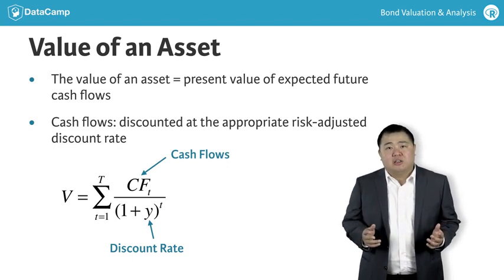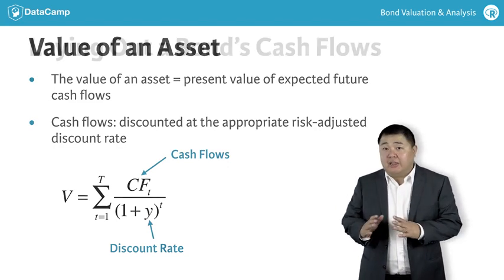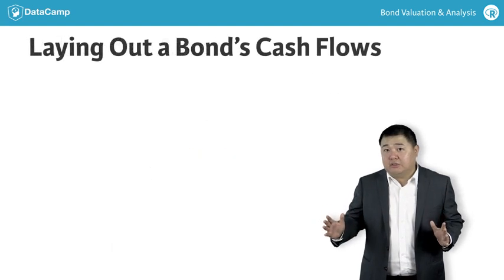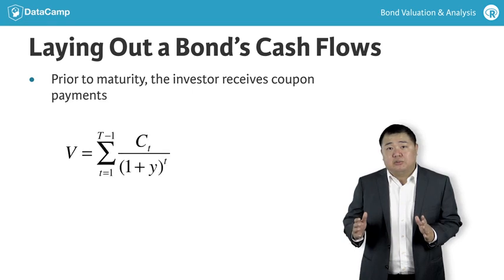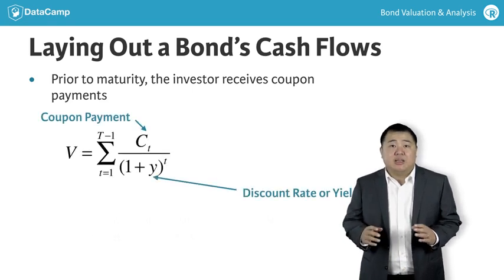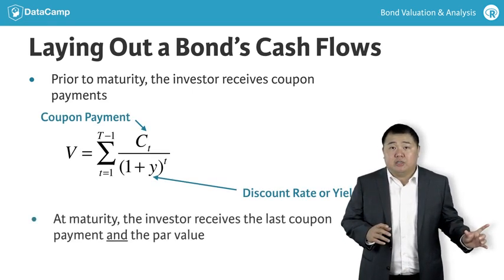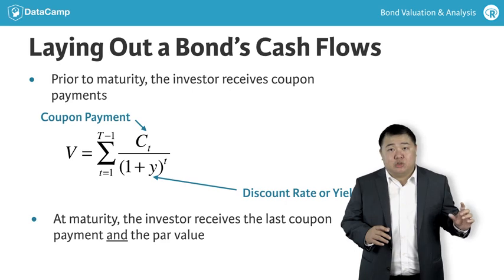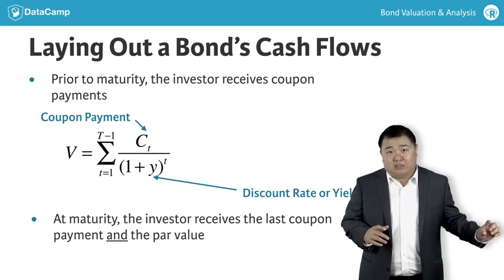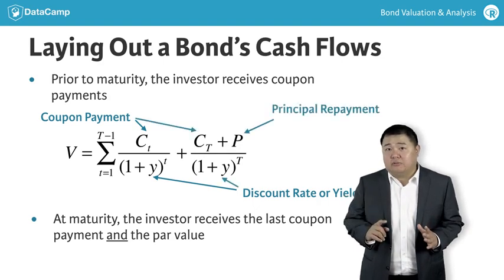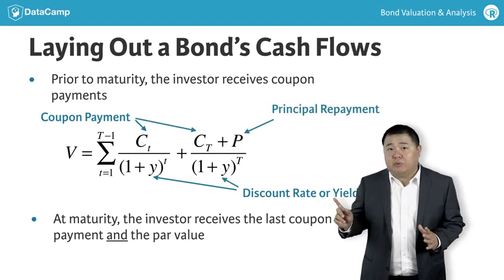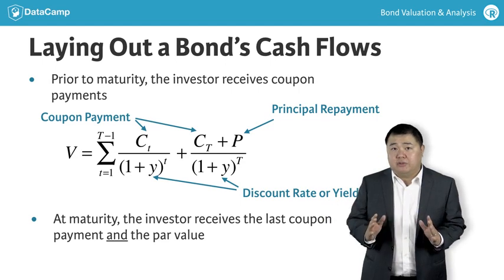Bonds are no different. The first step in calculating bond value is to lay out the cash flows we are discounting. Prior to maturity, the bond investor receives coupon payments. At maturity, the investor receives the last coupon payment and the par value. We can modify the equation from the last slide to account for how these cash flows are separated from a mechanical point of view.